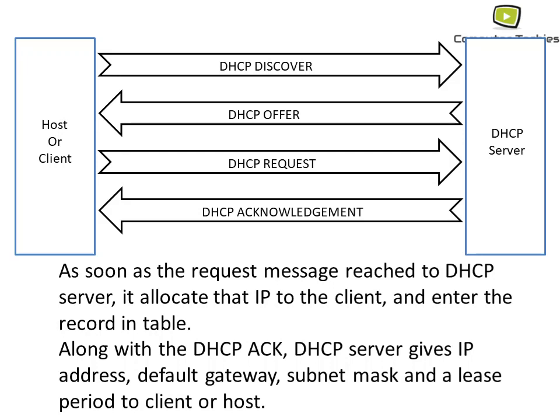The working of DHCP is easy to remember using four words: Discover, Offer, Request, and Acknowledgement. Relating this to daily life: if someone wants something from another person, they first find that person. Similarly, the host wants an IP address from the DHCP server, so it sends a Discover message — discovering or searching for the DHCP server.